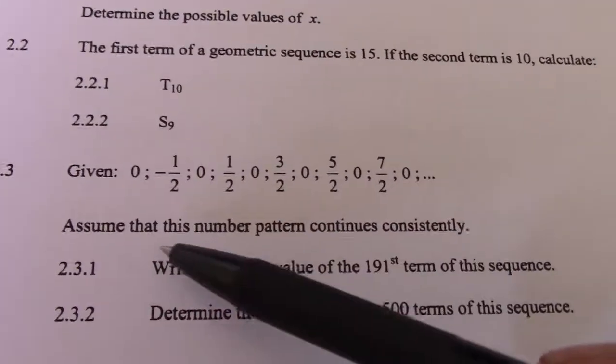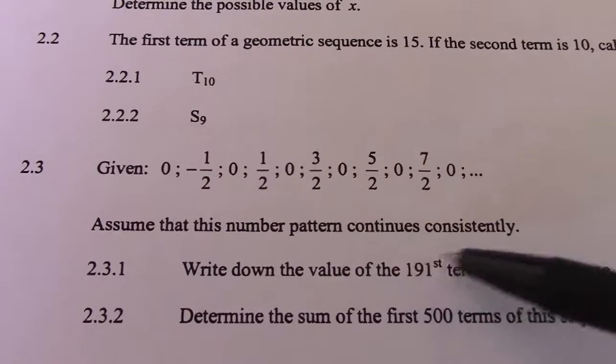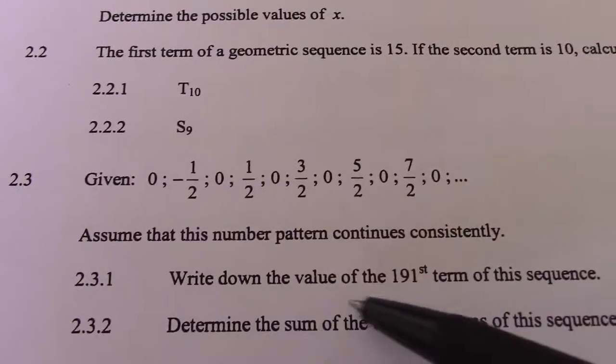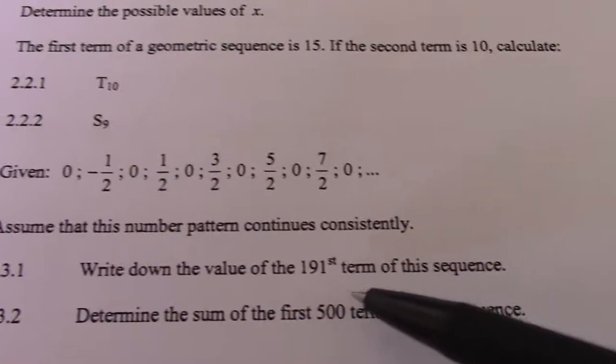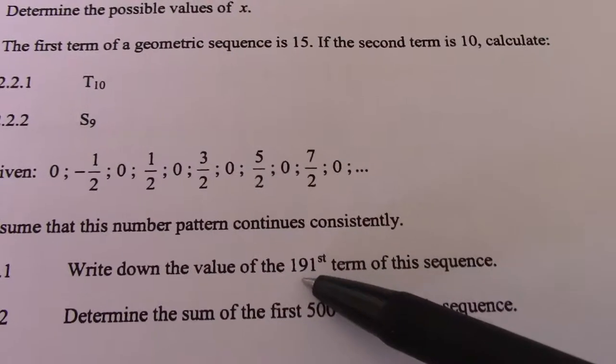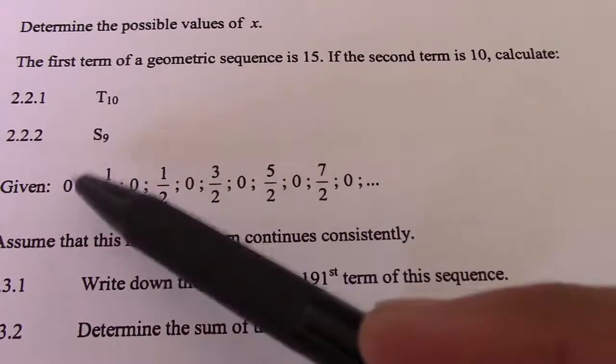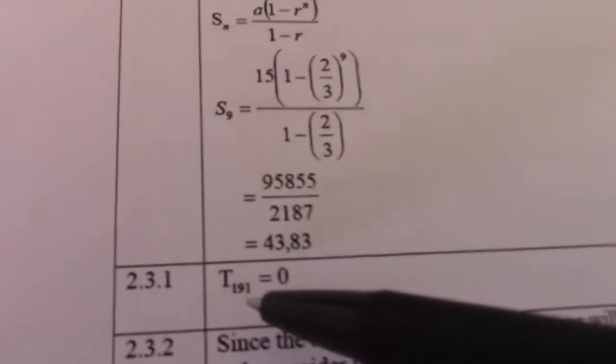Now assume that this number pattern continues consistently. Write down the value of the 191st term. So 191 is an odd number. As you can see, all the odd numbers are 0, so from here I can conclude that term 191 equals 0.